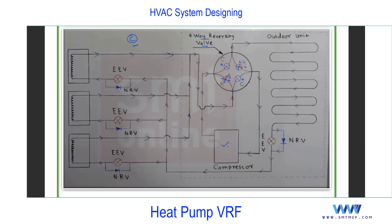The cycle starts from the scroll inverter compressor - same as what we discussed. The refrigerant leaves the compressor, passes through the open valve, and enters the condenser. After condensation, the refrigerant in liquid form passes through a bypass line with the NRV. It will not flow through the electronic expansion valve at this point - that EEV is in closed position in cooling mode.